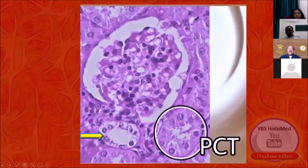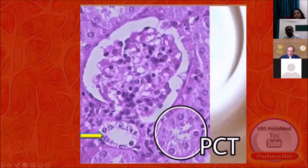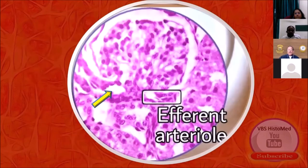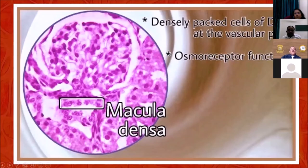Next, PCT — easy to identify, with long cells and a comparatively small lumen for the cell length. Shown by the yellow arrow, its counterpart the DCT has a large lumen size compared to cell height. We are heading towards the juxtaglomerular apparatus. The efferent arteriole can be seen on one side; its counterpart shown in yellow on the other side is the afferent arteriole. That area where there is a sudden increase in cell density is the macula densa — the word 'densa' itself tells you there is a higher aggregation of smaller cells. This is the macula densa, probably osmoreceptor in function.